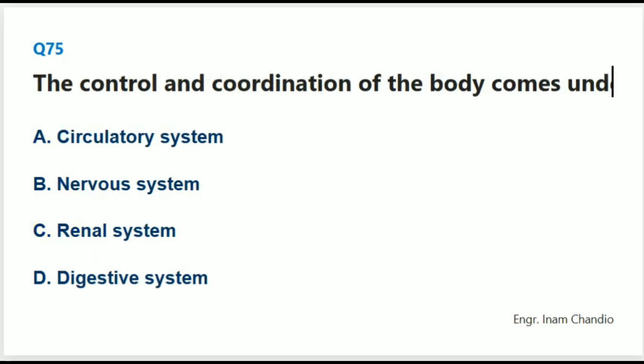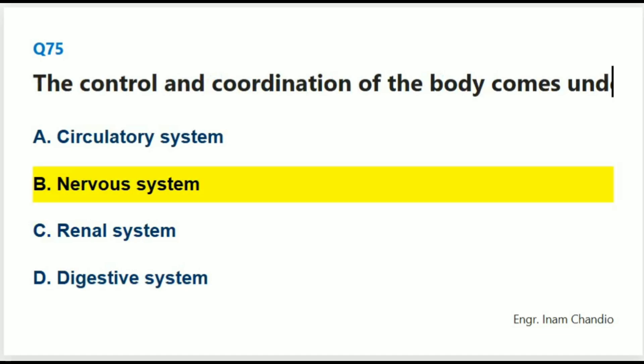The control and coordination of the body comes under: The correct answer is B. Nervous system.